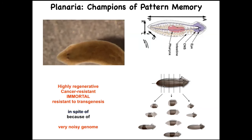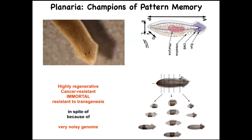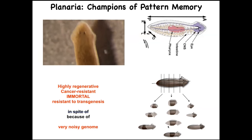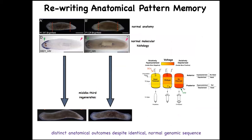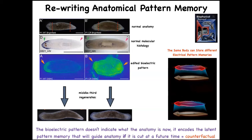We wondered how a piece knows how many heads and tails it's supposed to have. We discovered an electric circuit that determines this. You take the middle fragment of a normal worm — reliably, 100% of the time, it makes a one-headed worm. The bioelectrical pattern of this fragment, which we've been able to decode, says 'one head, one tail.' We can change that pattern to say 'two heads,' and this is what they build.